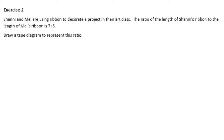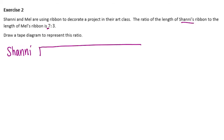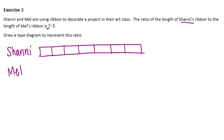Number two: Shani and Mel are using ribbon to decorate a project in their art class. The ratio of the length of Shani's ribbon to the length of Mel's ribbon is seven to three. Draw a tape diagram to represent this scenario. Shani's name is first, so her number is seven — I'll split the tape diagram into seven equal pieces. Then Mel's is three.